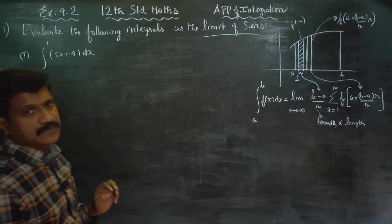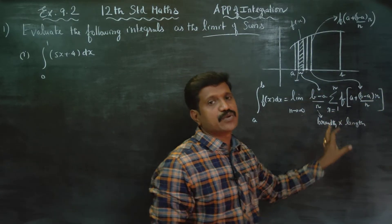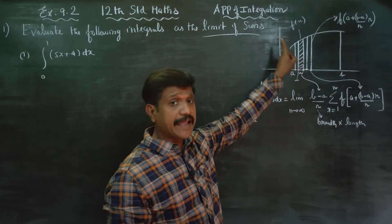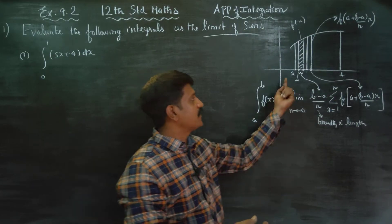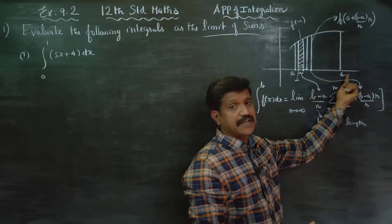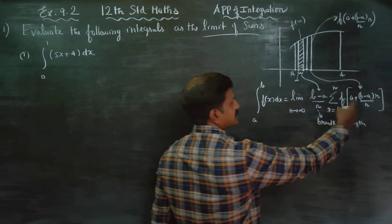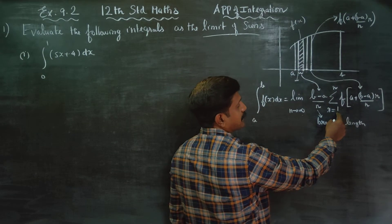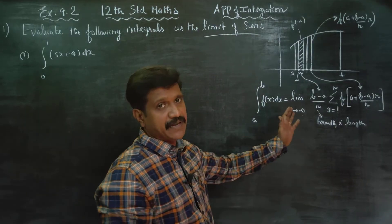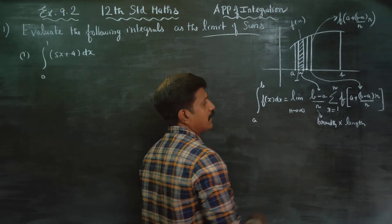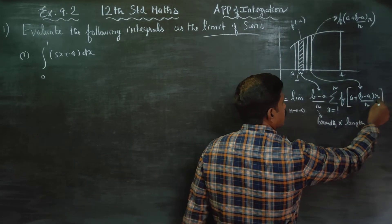How are we going to find the limit of the sum? The breadth formula is b minus a by n, and the length (height) formula is f of x. We use the right-hand limit Riemann sum formula: a plus b minus a by n into r, where r is the counter.